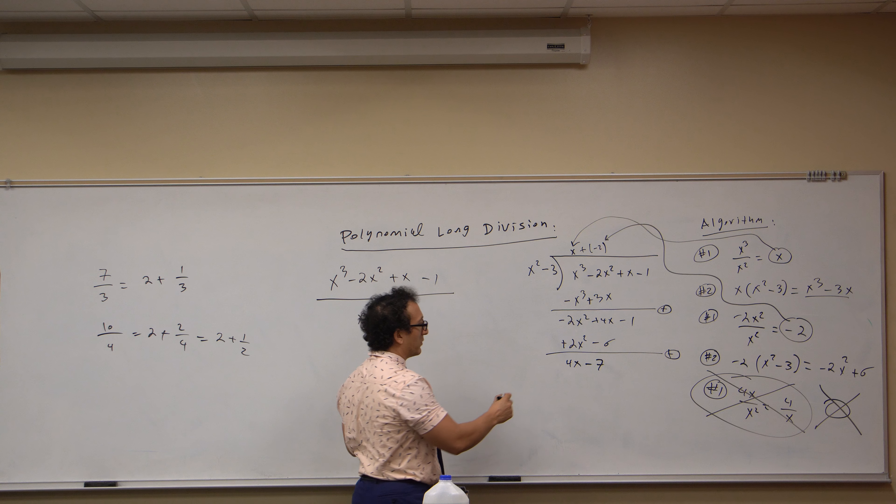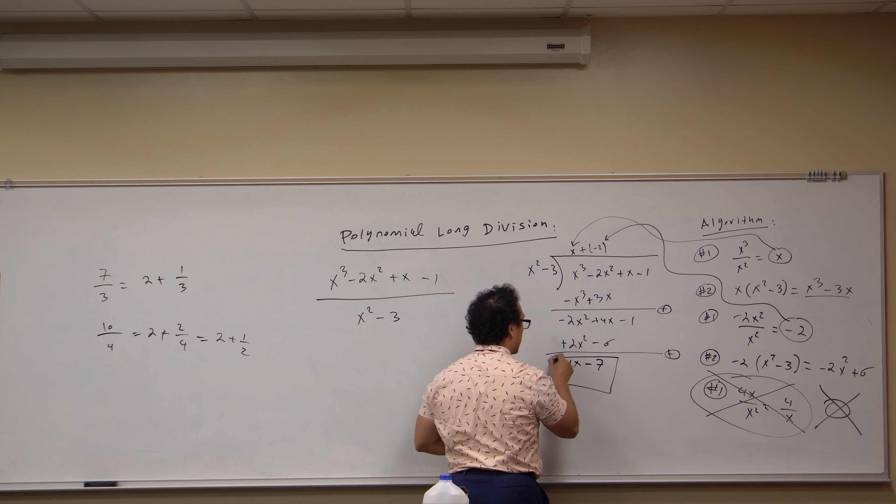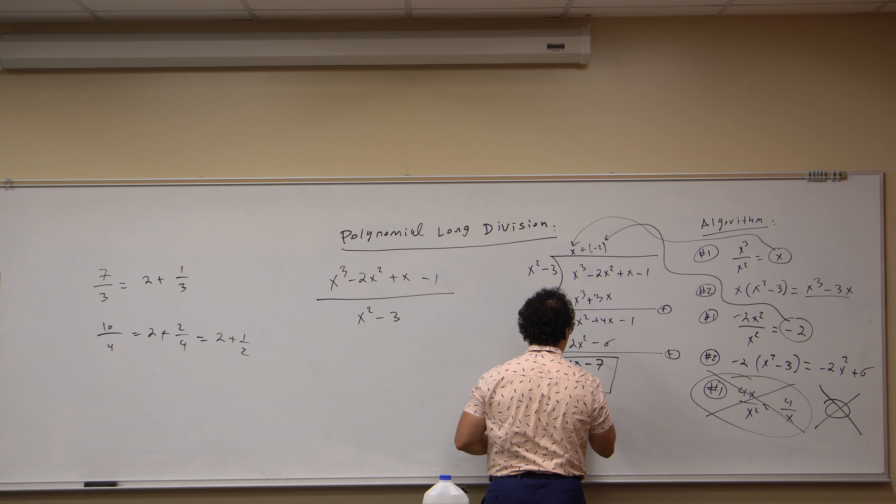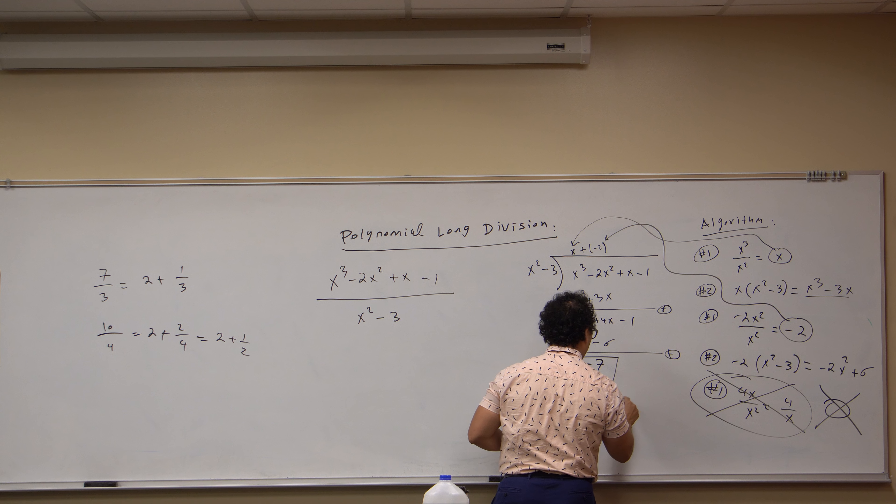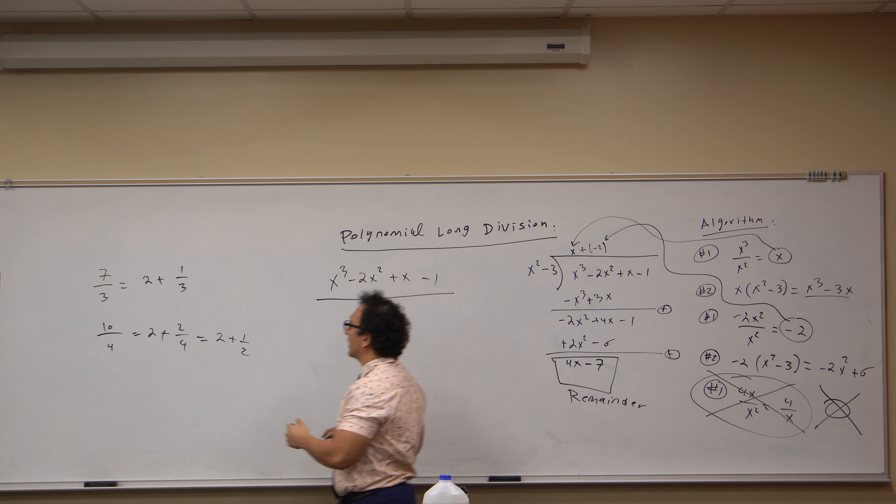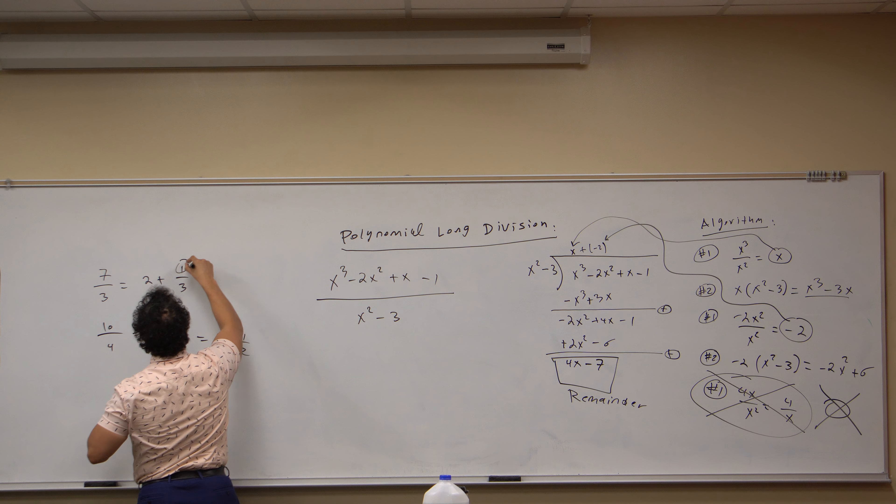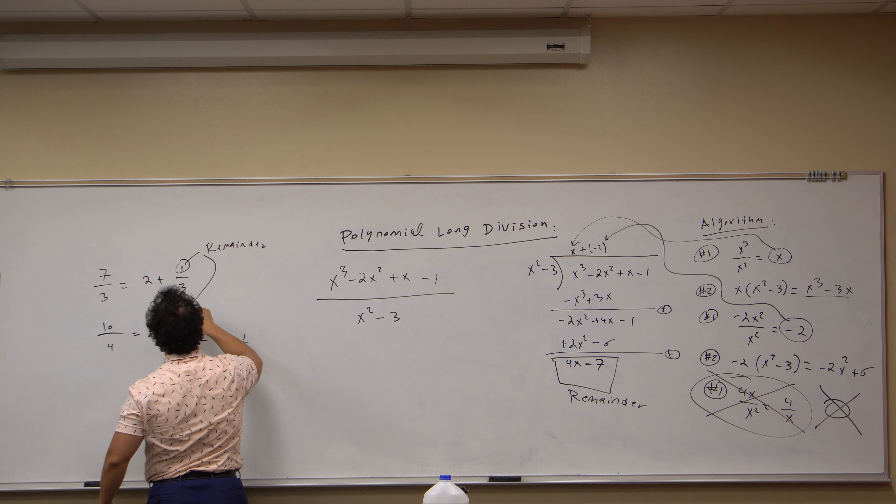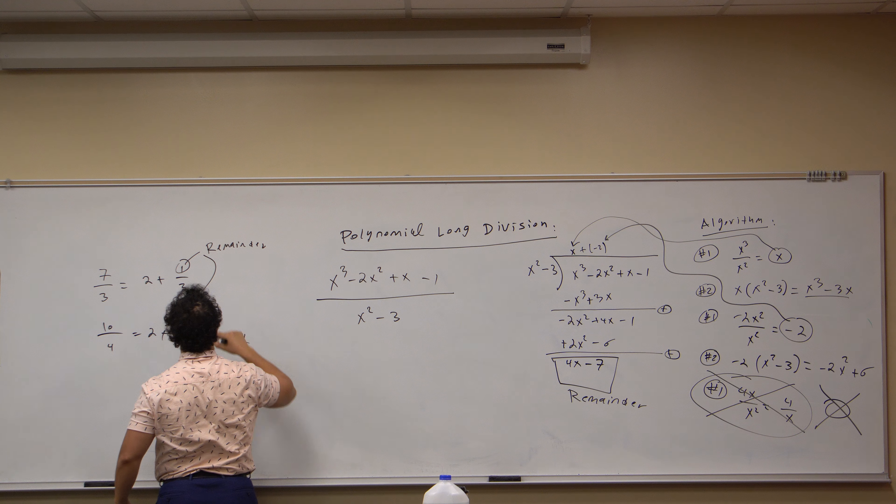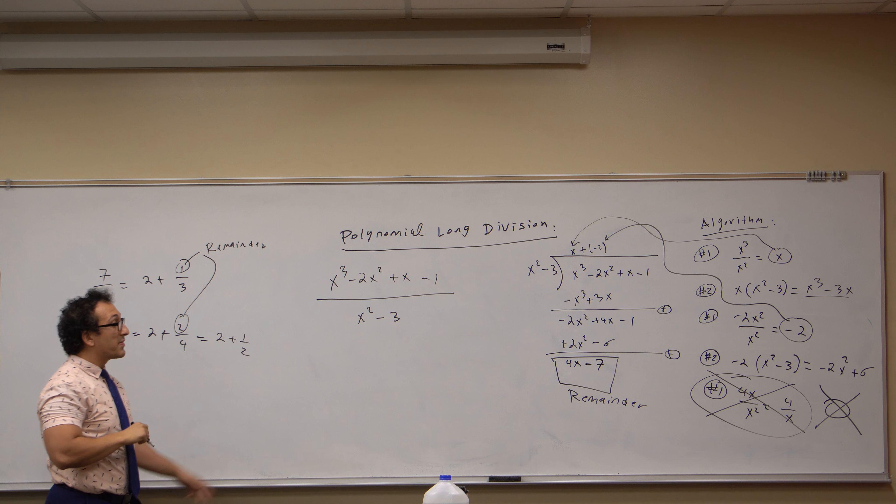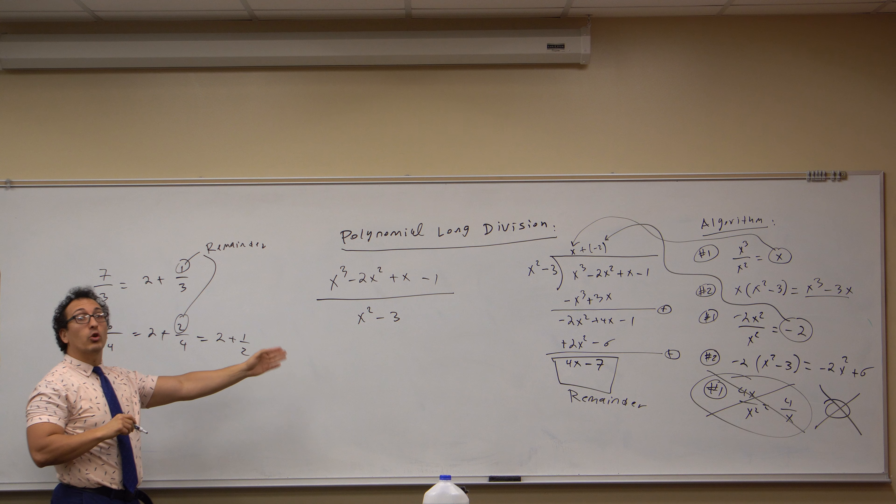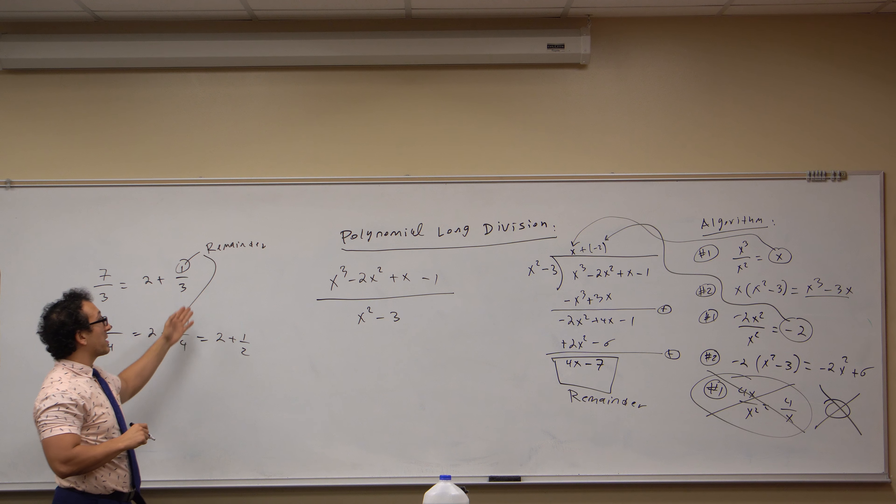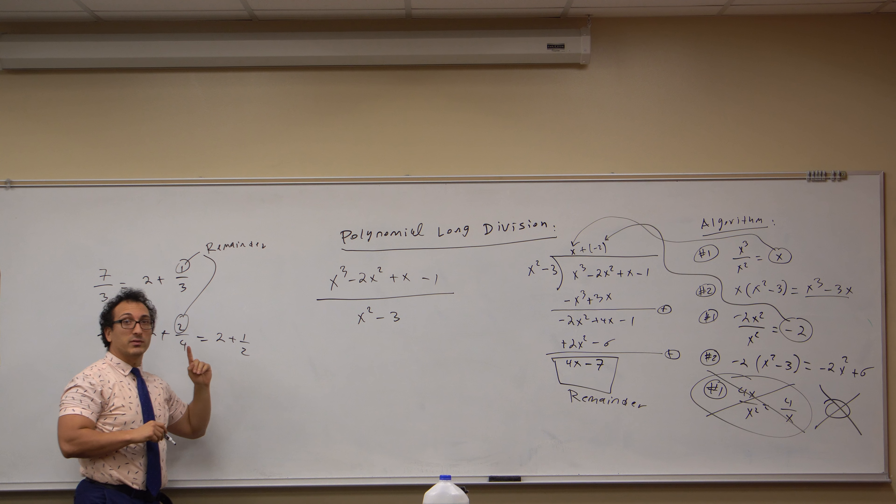What now is useful is this piece. This piece that is here is called the remainder. Just like how the remainder here was one, and just like how the remainder here was two, that is the remainder of the polynomial division, and these were the remainders of the number division.